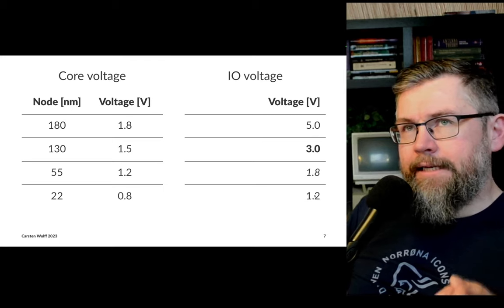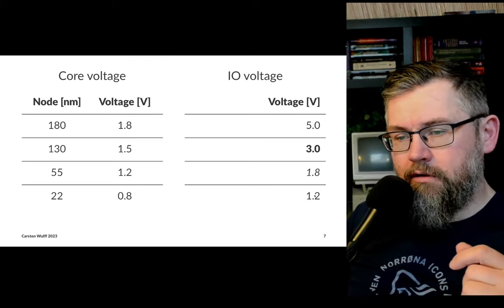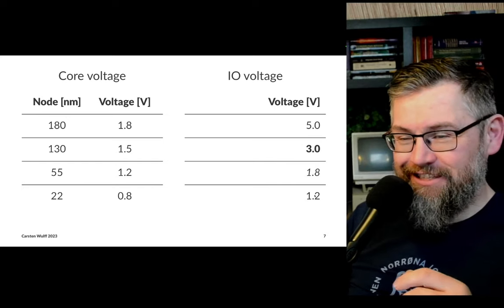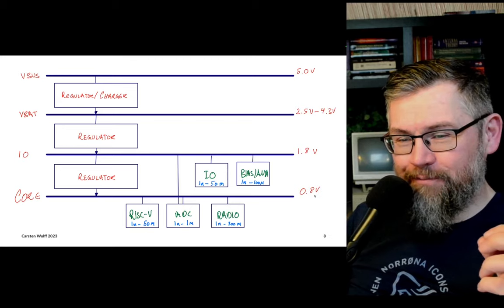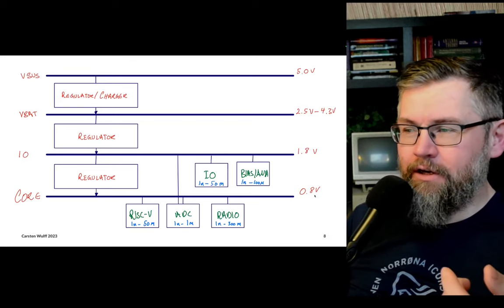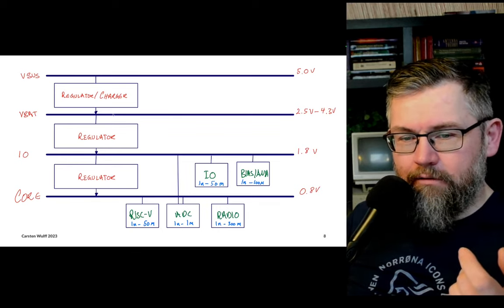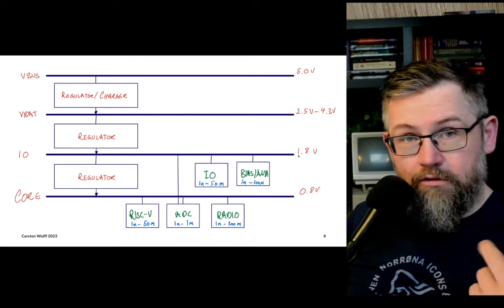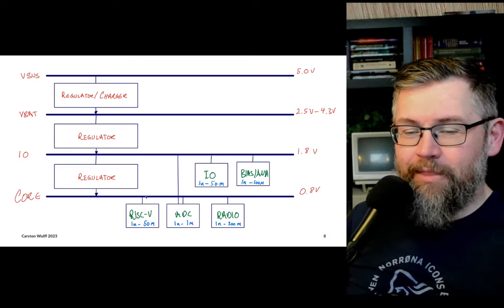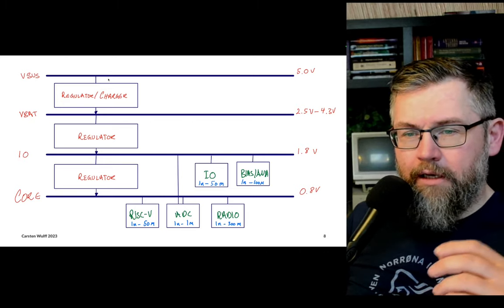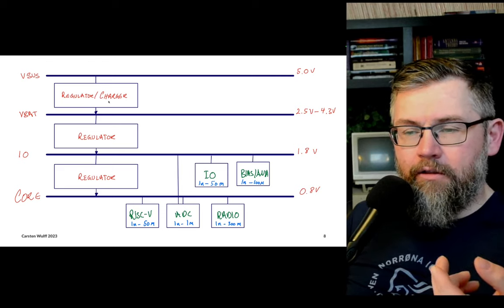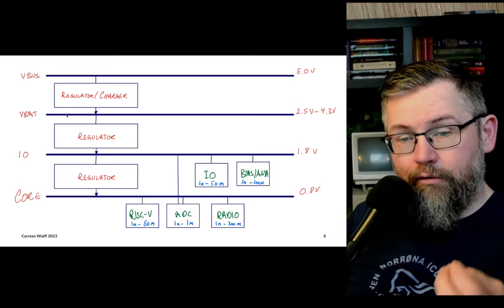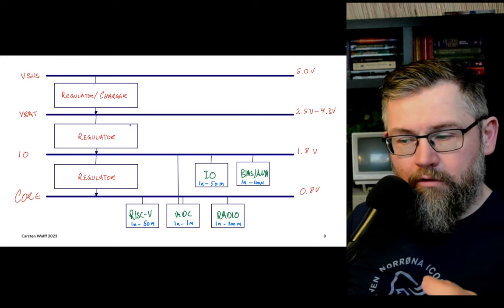In a chip, we need multiple voltages. We can't only use the battery voltage because our transistors will die, we can't talk to other chips at battery voltage, and we need to keep the voltage stable. In a typical complex system, maybe we have a USB connection at 5V, a lithium-ion battery between 2.5 and 4.3V, an IO voltage for talking to other chips, and a core voltage where all the digital logic runs. Between all these rails, there must be some form of regulator — a circuit that can control the voltage almost independent of the current pulled on that rail.